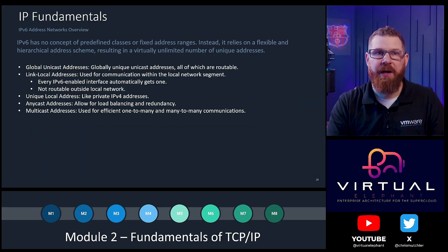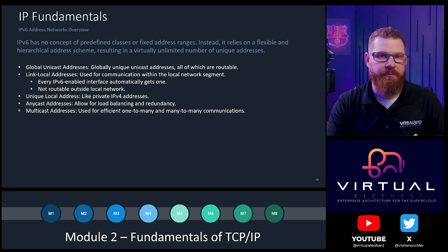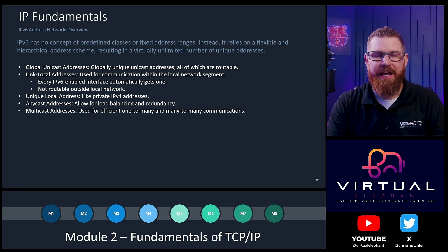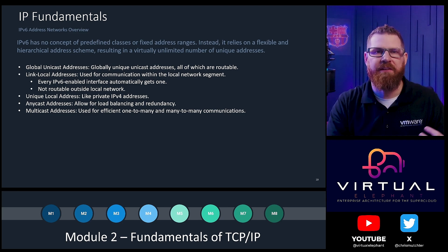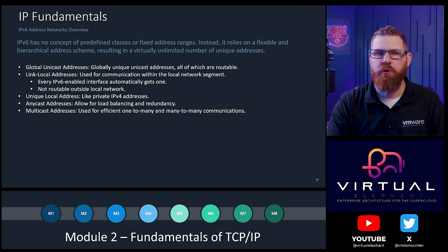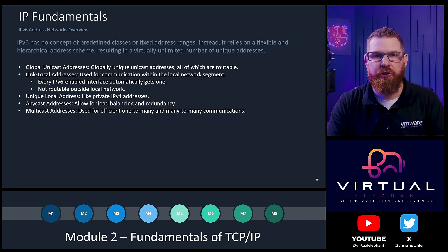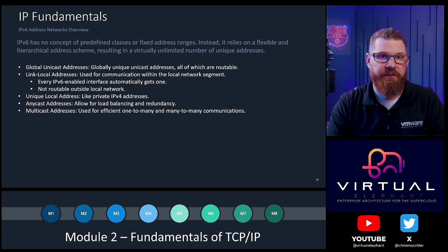IPv6 has no concept of predefined classes or fixed address ranges. Instead, it relies entirely on a flexible and hierarchical address scheme, allocating so many bits for network addressing that it's almost unfathomable for any organization to consume all the IP addresses. When we talk about IPv6, there are five address types to keep in mind: global unicast, link local, unique local, anycast, and multicast.